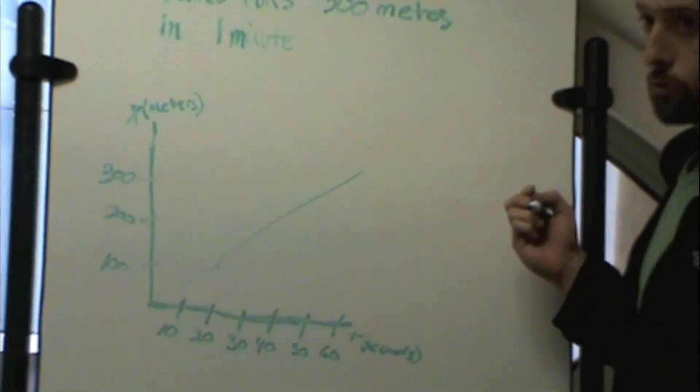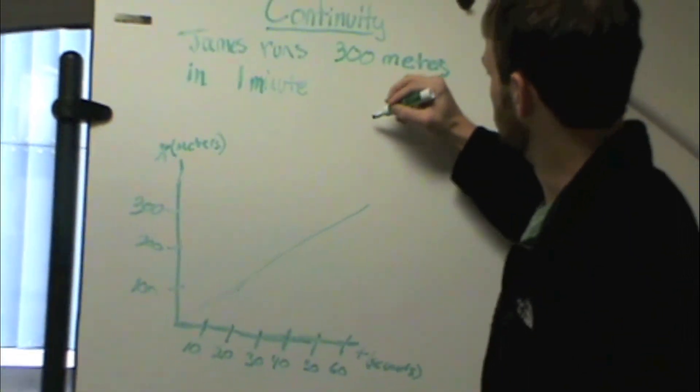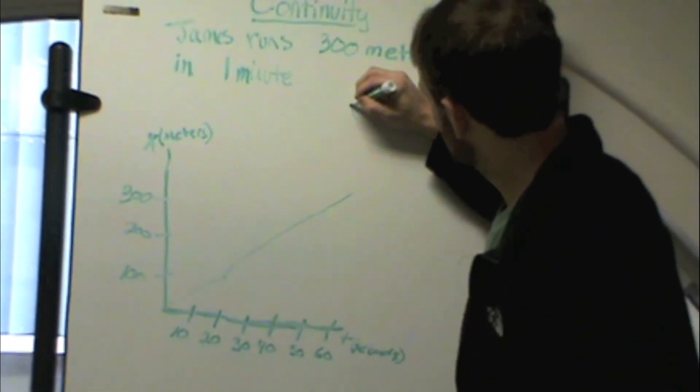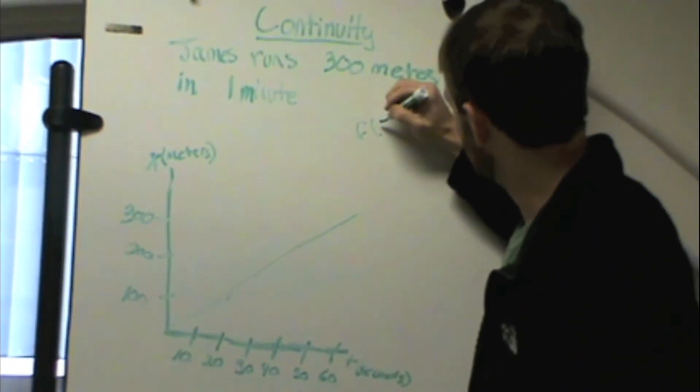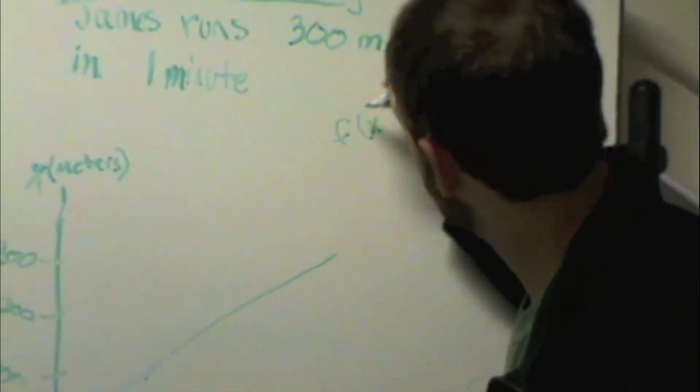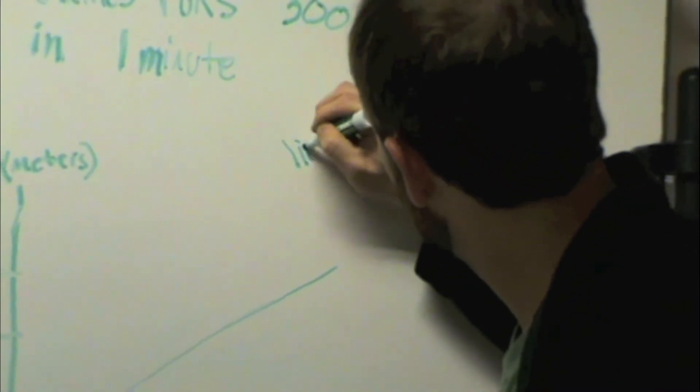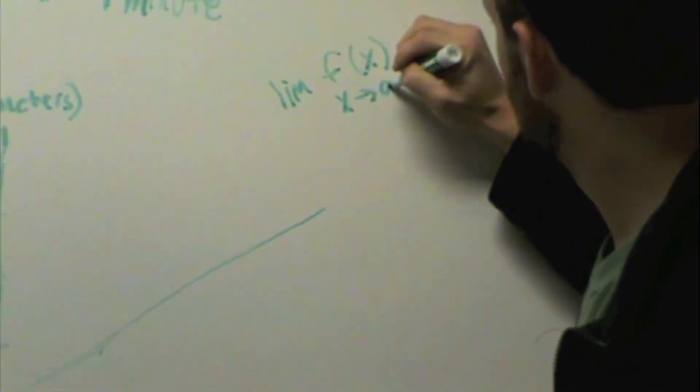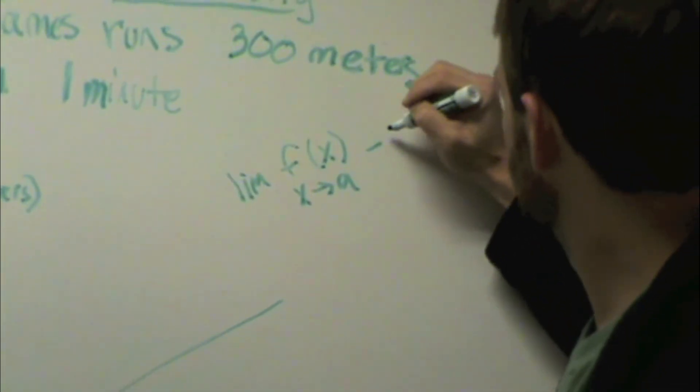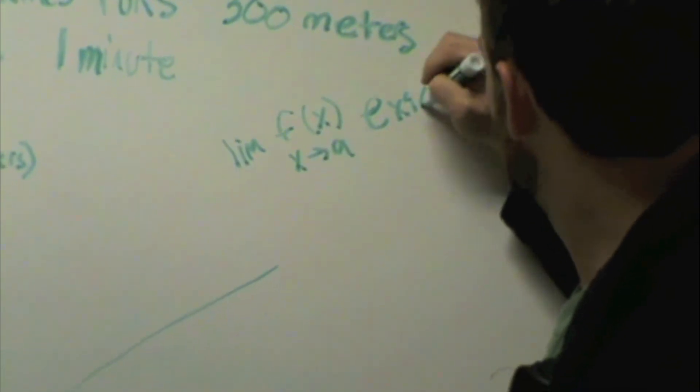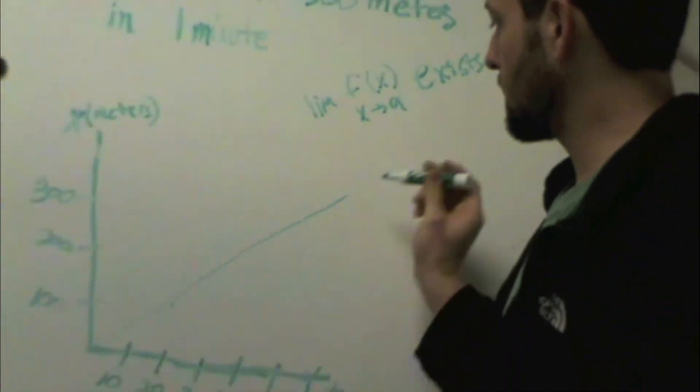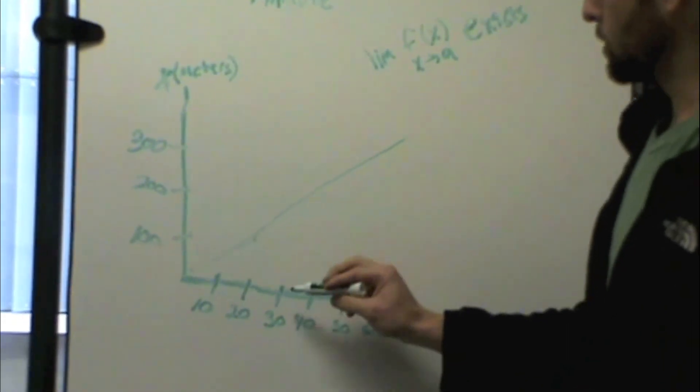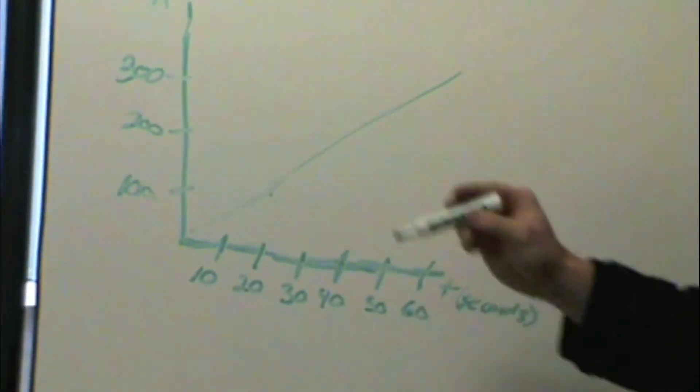So if we apply the rules that we learned earlier, we can tell that the limit of f of x as x approaches a exists. We can see that because as you're coming from the left hand side or the right hand side, no matter which point you choose, it's always going to exist.